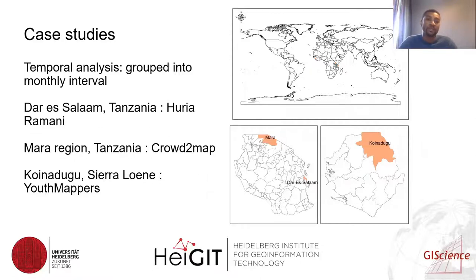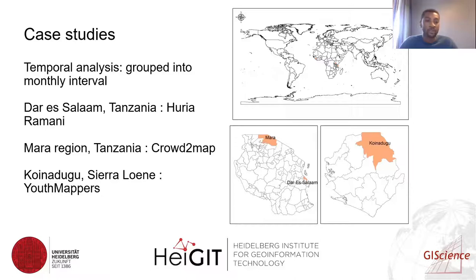We tested our filters using three case studies. One is Dar es Salaam, an urban area in Tanzania where most mapping activities have been done by the Humanitarian OpenStreetMap Team groups focused on flood resilient activities. We also selected Mara region, also in Tanzania, where a lot of work has been done by Crowd2Map, who map activities to support prevention of female genital mutilation. We also added a third area — a rural area where there has been a lot of work done by youth mappers.